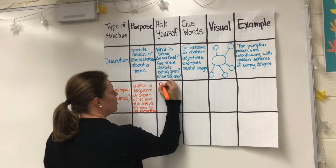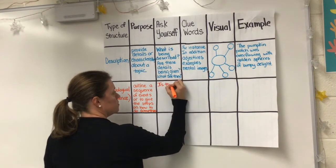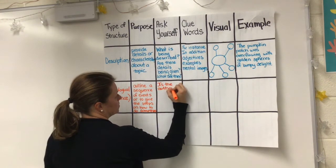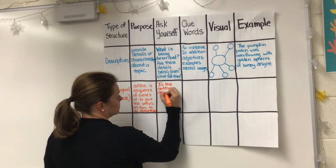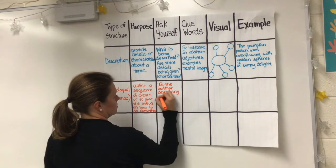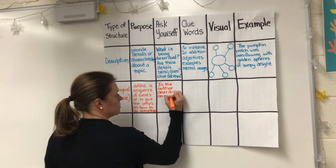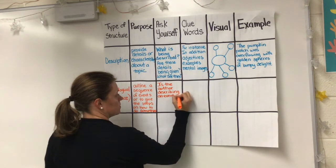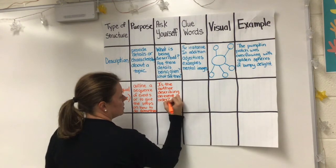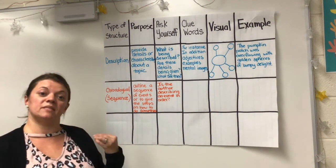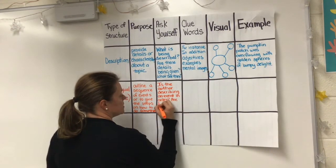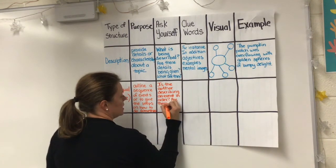Some questions you might ask yourself: Is the author describing an event in order? You could also think, is it giving the steps that need to be followed? Are there steps that need to be followed?